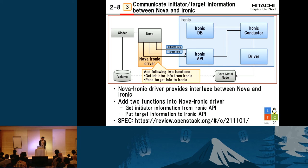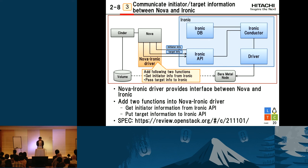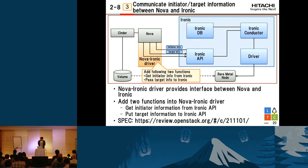The third function is communicating initiator and target information between Nova and Ironic. Nova Ironic Driver provides the interface between Nova and Ironic, so to support this communication we add two functions into the Nova Ironic Driver: one is getting initiator information from the Ironic API, and the second one is putting target information to the Ironic API. There is a spec for this feature from HP, so if you want to know the details, please look at it.